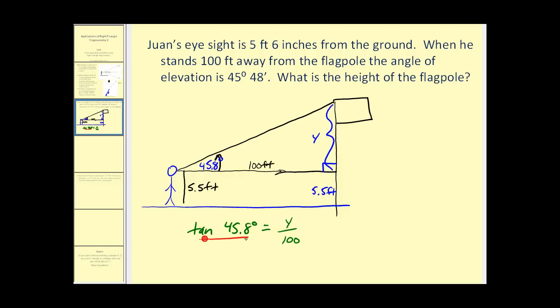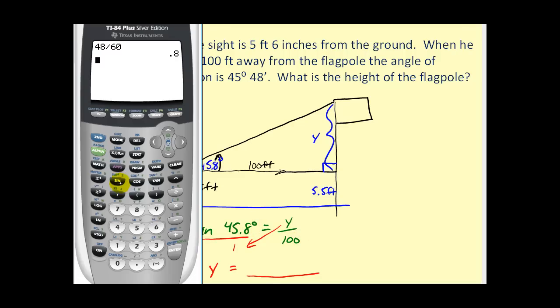We can say the tangent of 45.8 degrees must equal y over 100. If we put this over one, we could just perform cross products. One times y would equal y. And y will equal tangent 45.8 degrees times 100. Make sure your calculator is in degree mode times 100, and 102.83 feet.